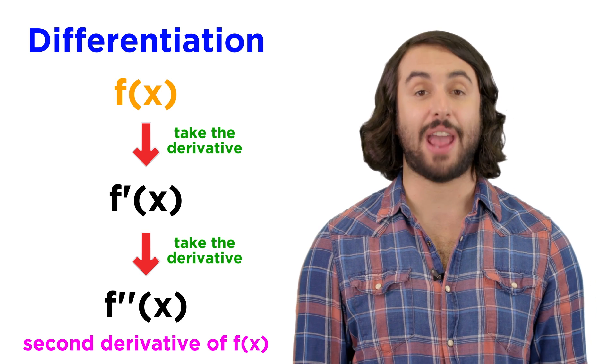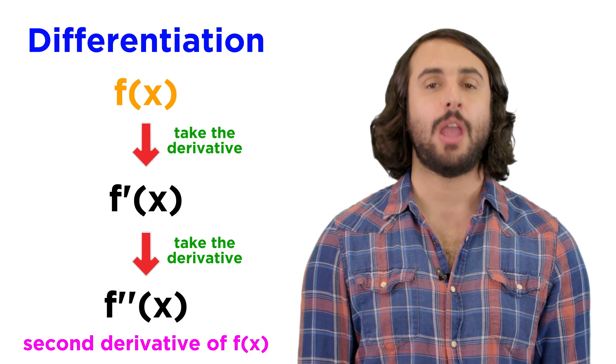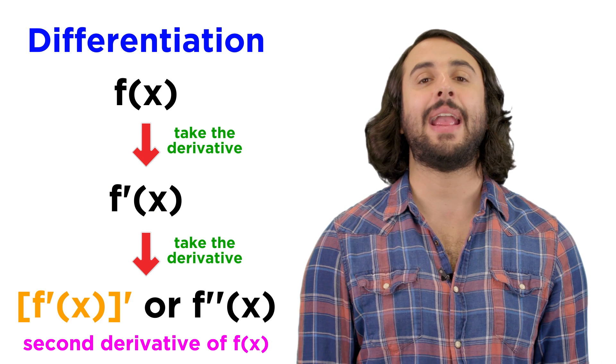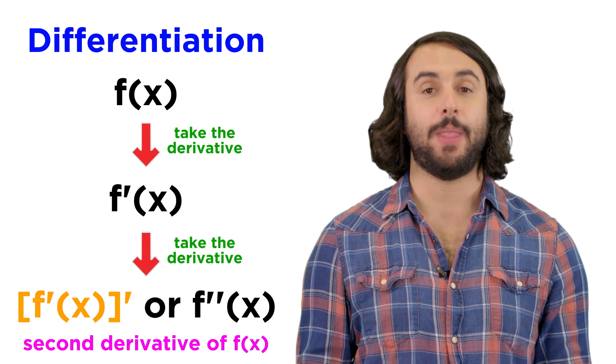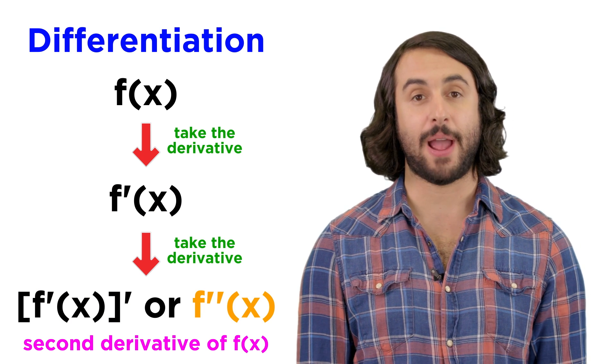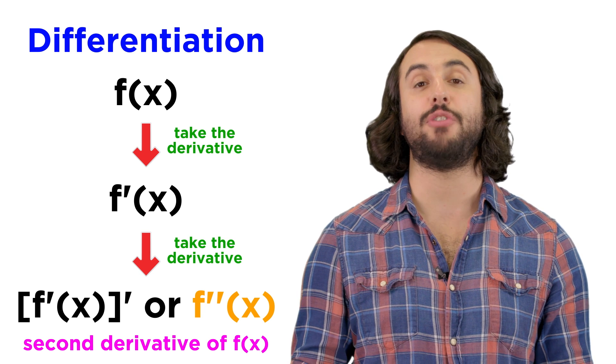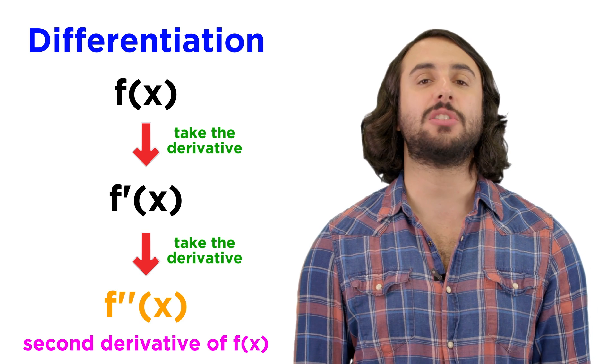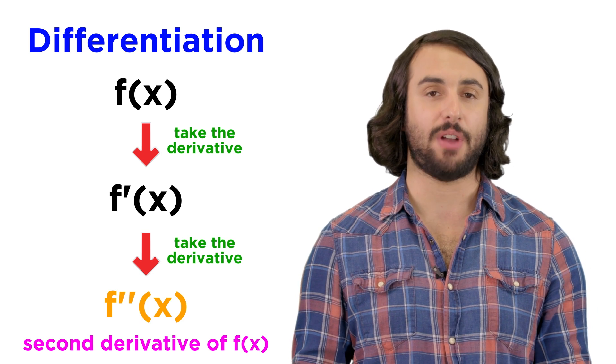So if we have some function f, and we take the derivative, we get f prime, and if we try to get f prime prime, or f double prime, which is the derivative of the derivative of f, we must call this the second derivative of f.